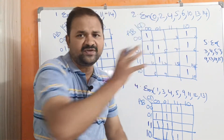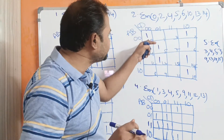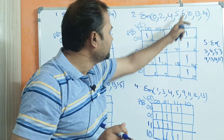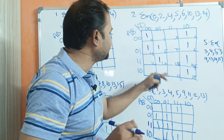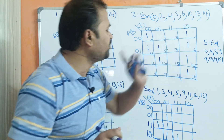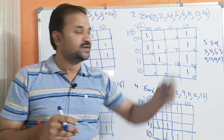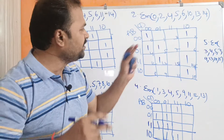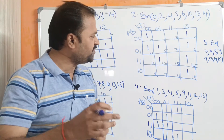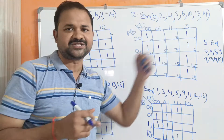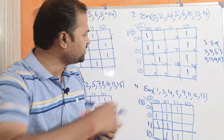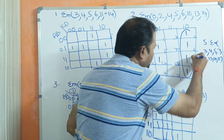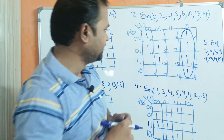The table is already filled. Minterm 0 is this cell, 2 is this cell, 4 is this cell, 5, 6, 10, 13, 14 — for all these corresponding minterms we write 1 in the table. Now we need to perform the pairing. First we search for 16 ones — not there. Next, 8 ones — also not there. Here we have 4 ones, so we can make those 4 cells as a group.